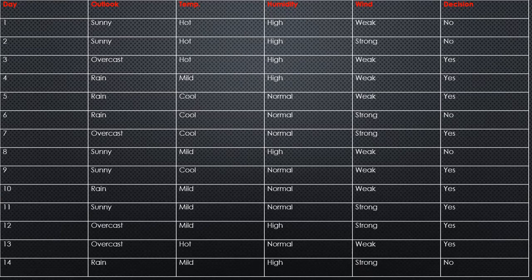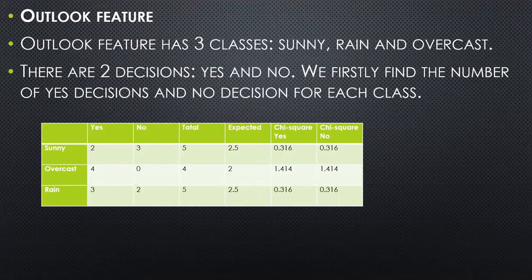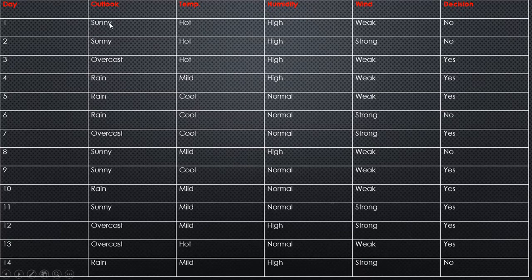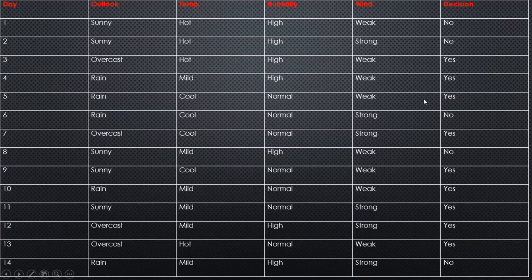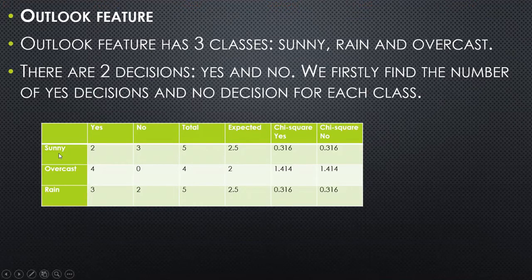We are going to prepare a decision tree for this entire table using the C4.5 algorithm. First, we take the outlook feature. This attribute has three classes: sunny, rain, and overcast. Based on these three classes, we see yes and no decisions occurring. We prepare a table: when outlook is sunny, yes appears 2 times and no appears 3 times; when outlook is overcast, yes is 4 and no is 0; when outlook is rain, yes is 3 and no is 2. The totals are 5, 4, and 5.